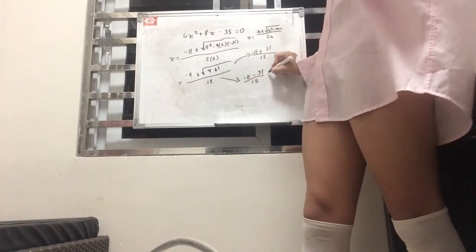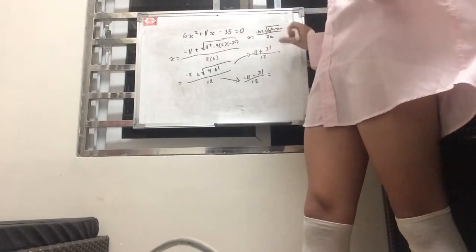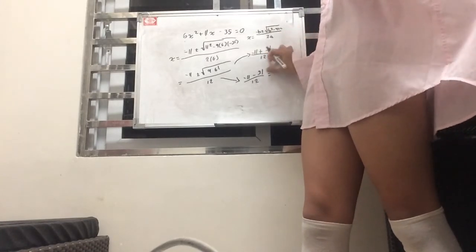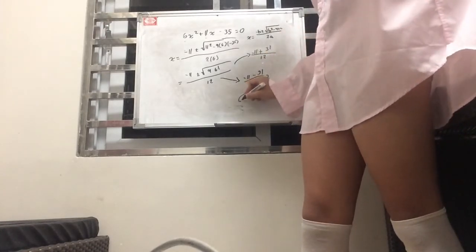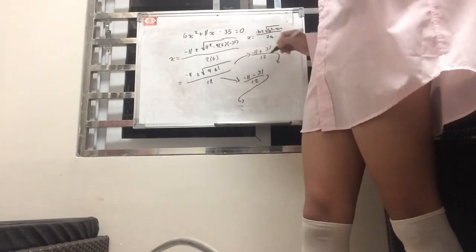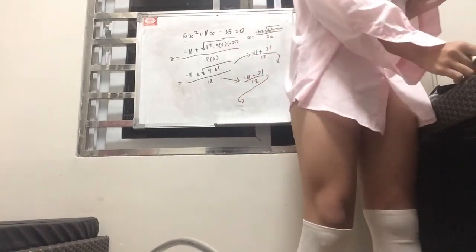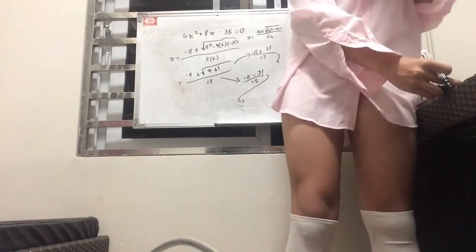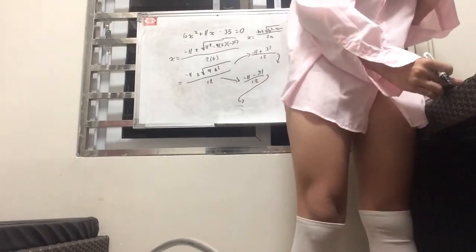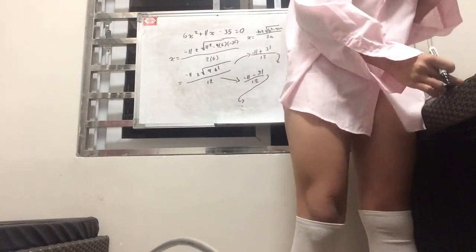So, that would be negative 11 plus 31 over 12. Or negative 11 minus 31 over 12. And so, let's just simplify it.